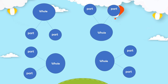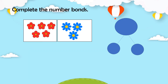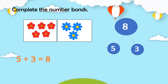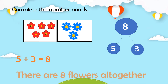To fully understand this, let's have some examples using number bonds. Let's complete the number bonds by counting the number of each object in each group. We have five red flowers and three blue flowers. These numbers represent the parts of the number bond, so we put five and three at the bottom. Five and three makes eight, so we put eight at the top because it represents the whole. Using the mathematical sentence: five plus three equals eight, and there are eight flowers altogether.